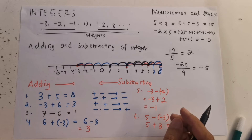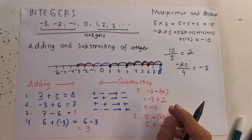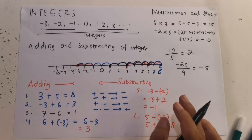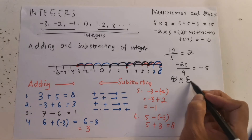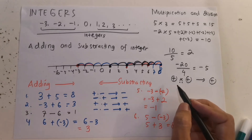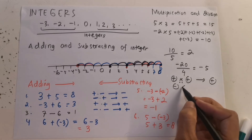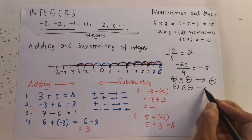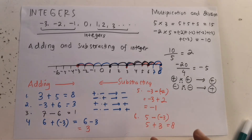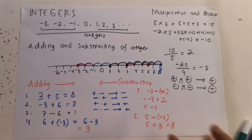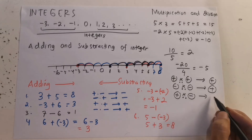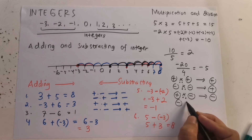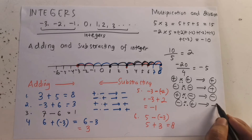You have to remember the rule for multiplication and division. When you multiply or divide two numbers having the same sign, the answer is positive — positive times or divided by positive is positive, and negative times or divided by negative is positive. When you multiply or divide two numbers having different signs, the answer is negative — positive times or divided by negative is negative, and negative times or divided by positive is negative.